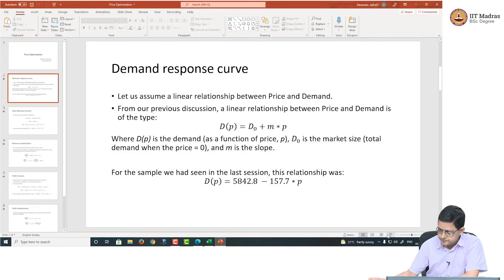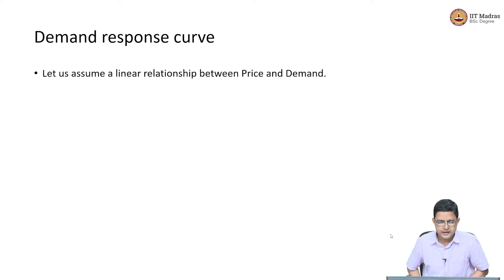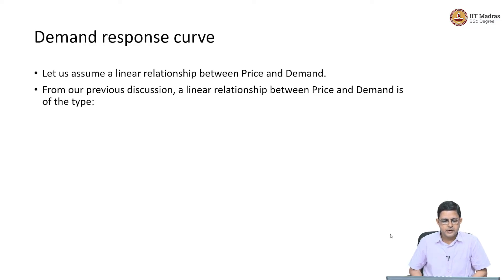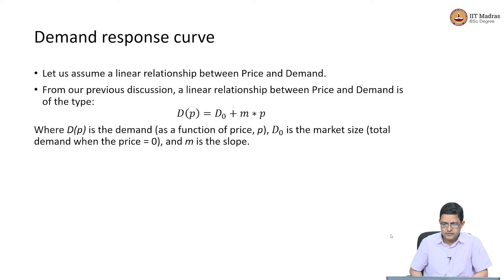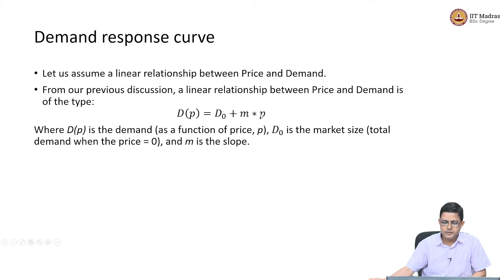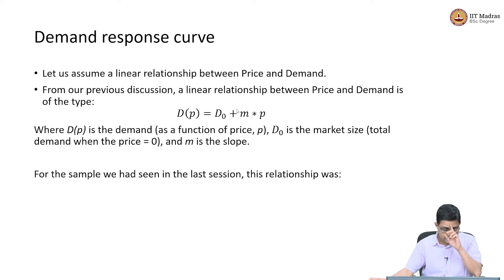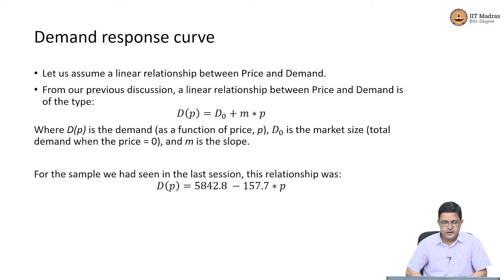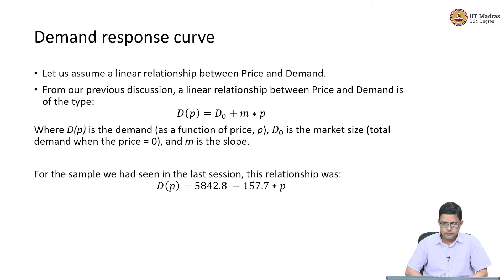Let us go back to our optimization discussion. The linear relationship between price and demand is of the type: Demand = D₀ + M·P, where D₀ is the total market size — total demand when price equals zero — and M is the slope. So for our numerical example, the equation is: Demand = 5842.8 − 157.7·P. This is our estimated linear demand response curve.